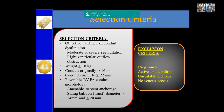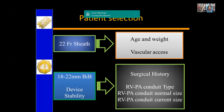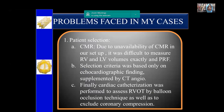The selection criteria, as already mentioned, is conduit dysfunction. We should consider weight because the 22 French delivery system must pass through the femoral vein — weight should be more than 18 kg, though we are now doing it in patients over 15 kg. The conduit originally should be 16 mm, and the maximum RVOT should be 22 mm for this type of valve. Exclusion criteria include active endocarditis, no venous access, and unsuitable anatomy. We must consider the age and weight of the patient because these are small children with very small femoral veins, and 22 French must pass through.